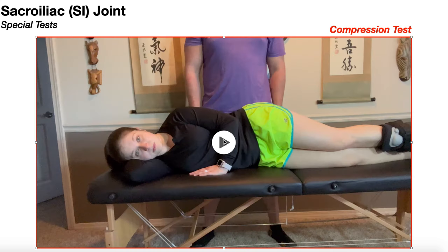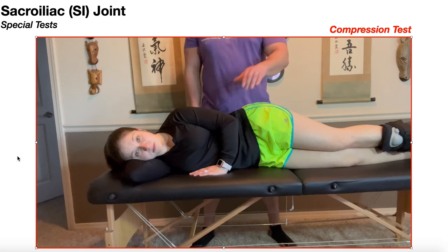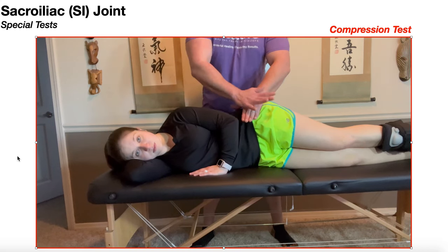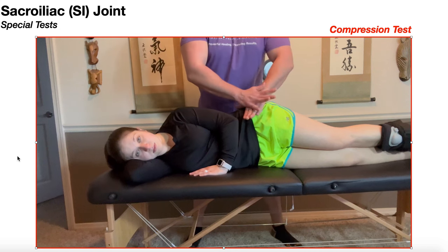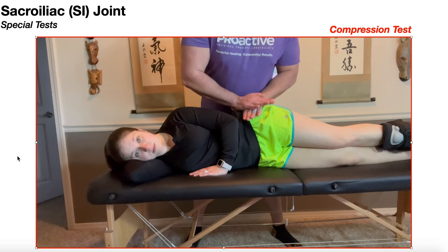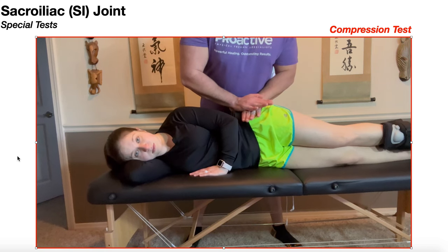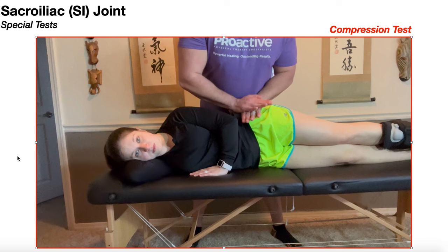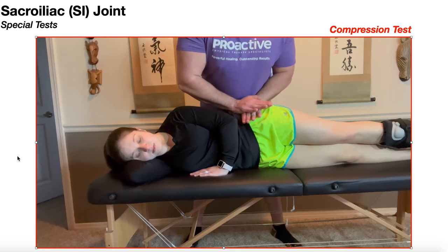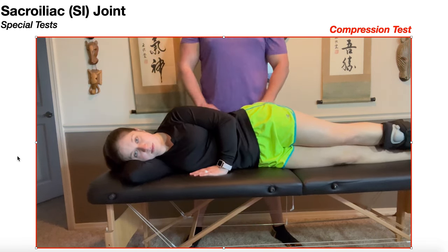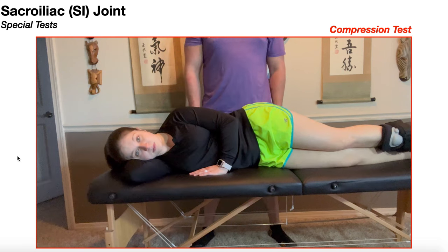To recap the compression test: patient is in sidelying on their symptomatic side. Manual contact on the anterior rim of the ilium. Apply three to six downward thrusts at moderate velocity with gradually increasing force. A positive test is familiar pain provocation.